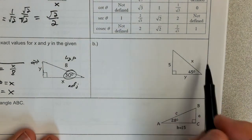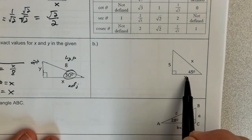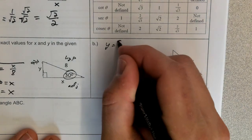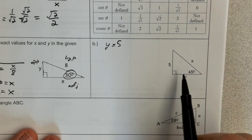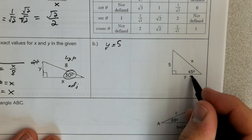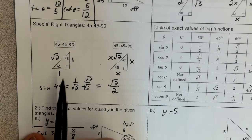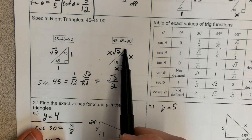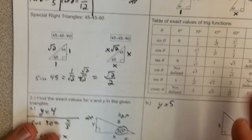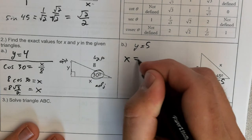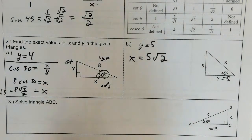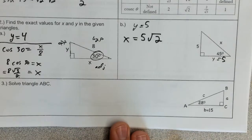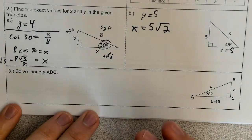For the 45-45-90 triangle: if one leg is 5, then the other leg must also be 5, so y equals 5. For the hypotenuse x, using the special right triangle rule, the hypotenuse is the leg times root two, so x equals 5 times the square root of two. That's the fastest method, though you could also use the Pythagorean theorem or sine/cosine with the table.